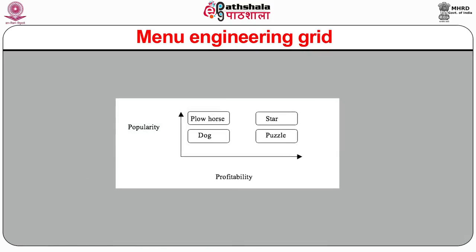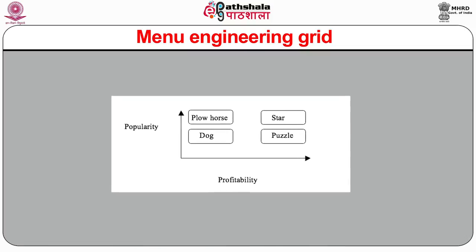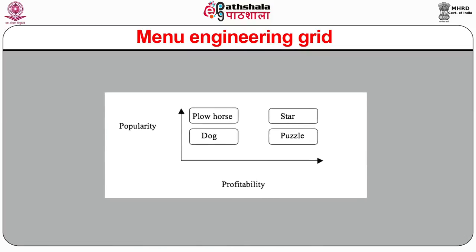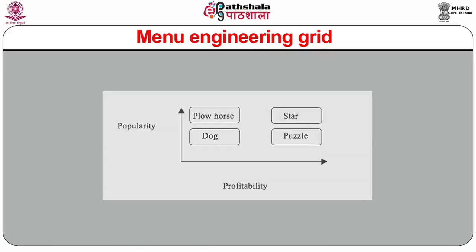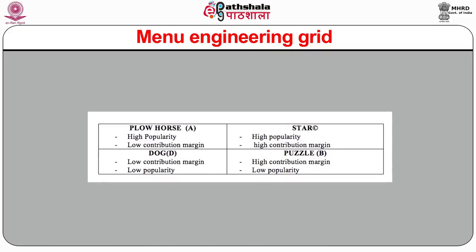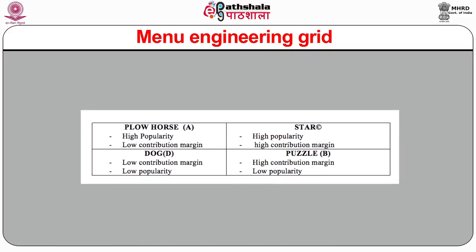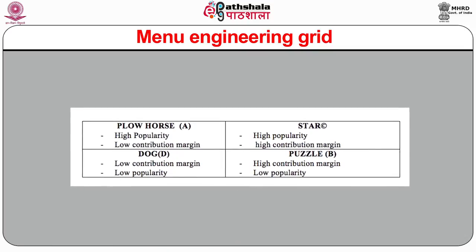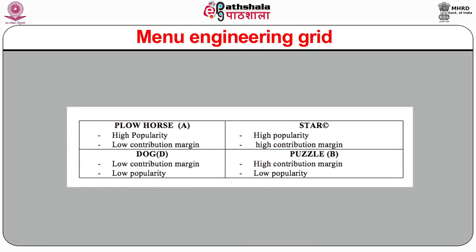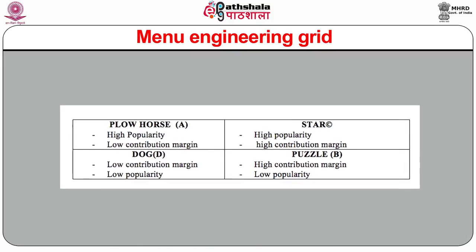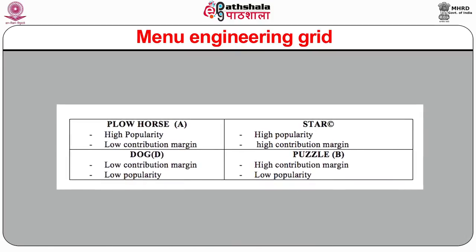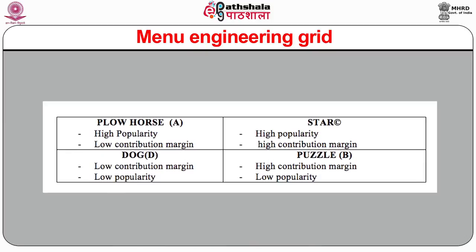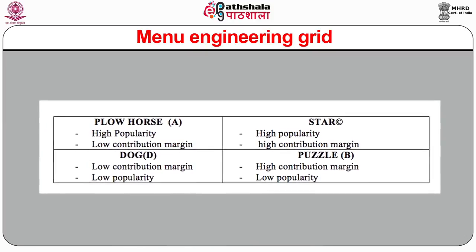The menu engineering grid is a graph that plots all menu items by popularity and profitability. The four categories are: Plow Horse — high popularity, low contribution margin; Star — high popularity, high contribution margin; Dog — low contribution margin, low popularity; and Puzzle — high contribution margin, low popularity.